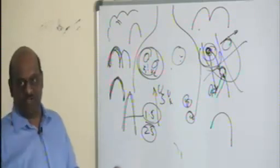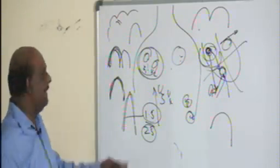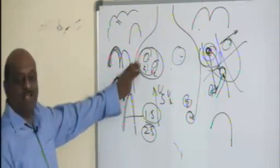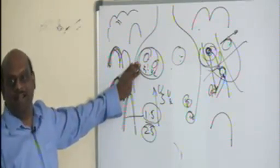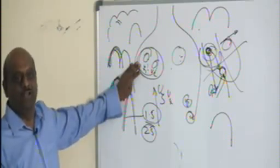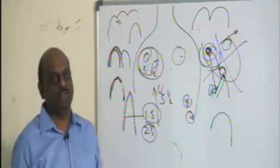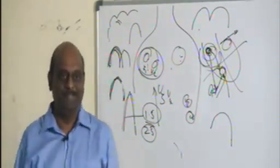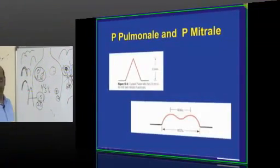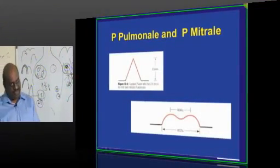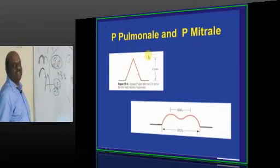This is a large story that I am trying to condense. P-pulmonale due to right atrial enlargement is a reasonable question. Pseudo-P-pulmonale? That is too much. If you did not answer, no regrets. If you answered, you were wildly guessing it.